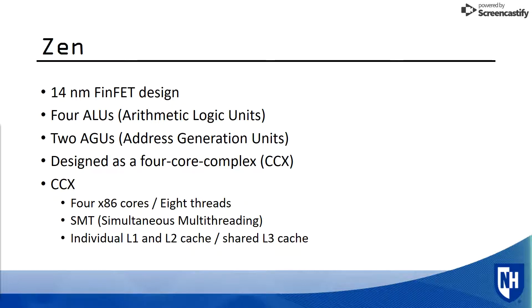The CCX, or four-core complex, has four Zen x86 cores. Each core has simultaneous multi-threading, providing for eight threads of compute. Each core has L1 and L2 cache, and all four cores share an L3 cache.